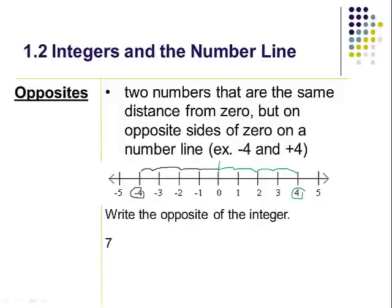Go ahead and write the opposite of these integers. The opposite of seven — positive seven is over here, so the opposite would be all the way over here on the negative side: negative seven. And then we have negative five — the opposite wouldn't be negative three or negative five again, it would be all the way over here: positive five.